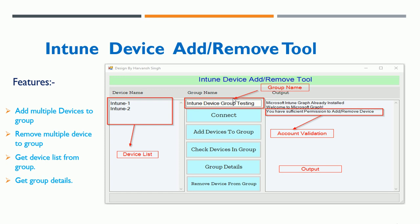Let's talk about the tool's features and then I'll show you how it works. This is the tool structure — it looks like this. This panel is your device input area where you can paste a multiple device list, and this area is for the group name.